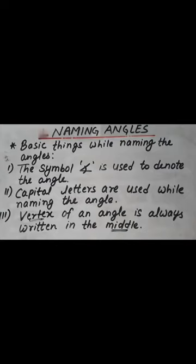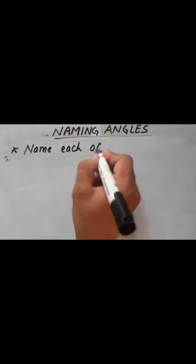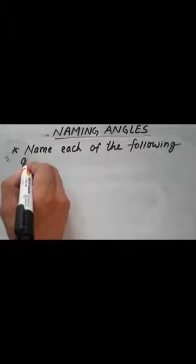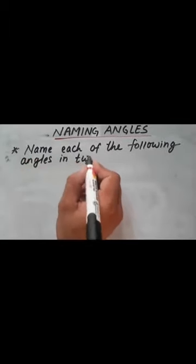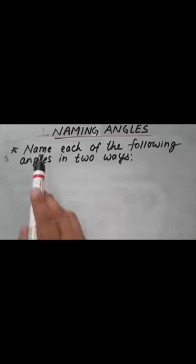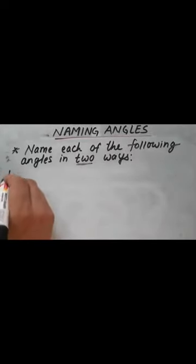Now let's see some examples. In an exam, you may be asked in this way: 'Name each of the following angles in two ways.' The question is asking you to write the name of the given angles in two ways. So let's take one example angle.